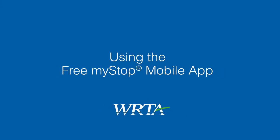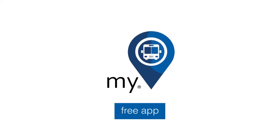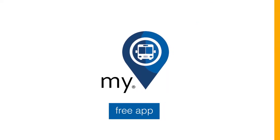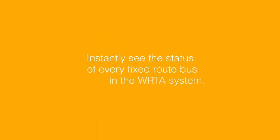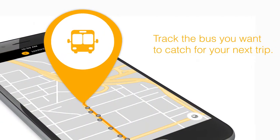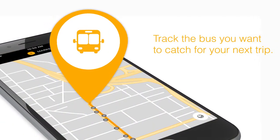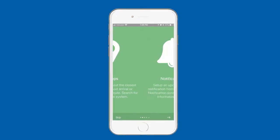If you have the MyStop mobile app on your smartphone or tablet, you can instantly see the status of every fixed route bus in the WRTA system, including the bus you want to catch for your next trip. Here's a look at the many things you can do with this app.